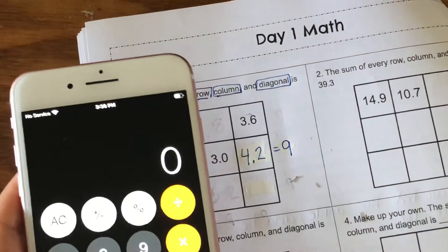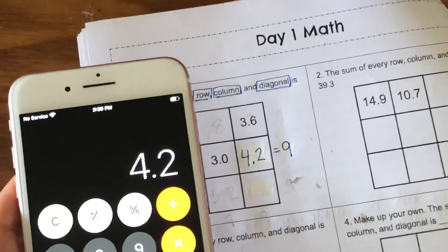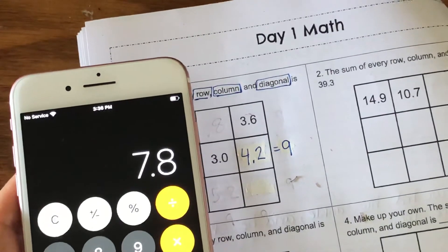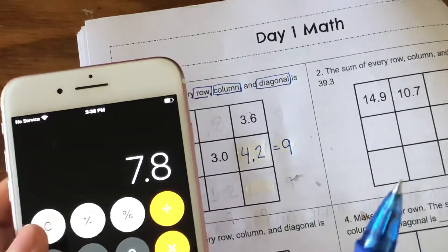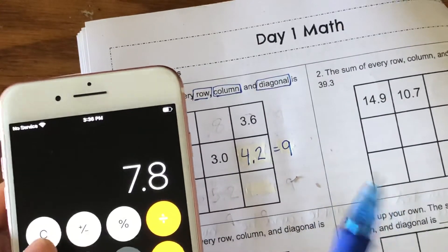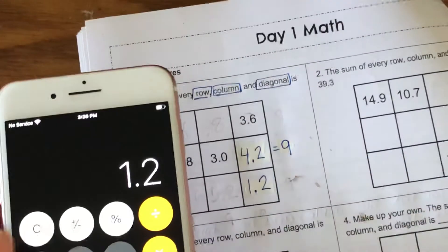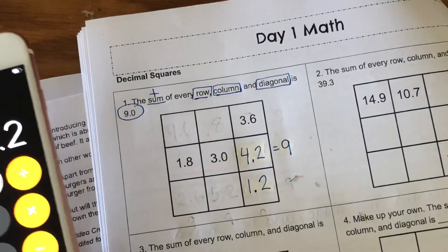I'm gonna switch it up. I'm gonna go 3.6 plus 4.2 equals 7.8, so now I'm gonna take away 7.8 from 9, which equals 1.2.